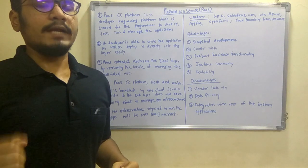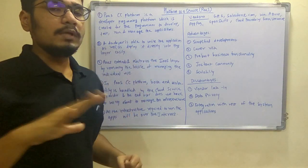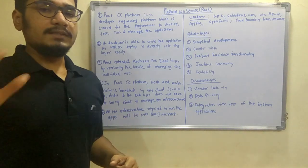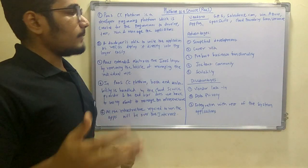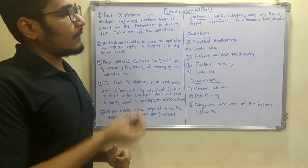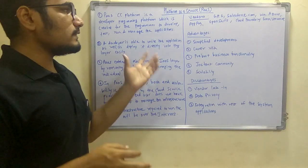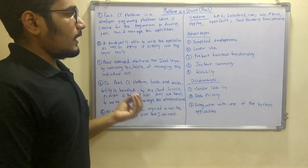Different vendors provide PaaS. First is GAE (Google App Engine), next we have Salesforce.com, then Windows Azure from Microsoft, then AppFog, OpenShift, and Cloud Foundry from VMware. These are the different vendors from which you can get PaaS.